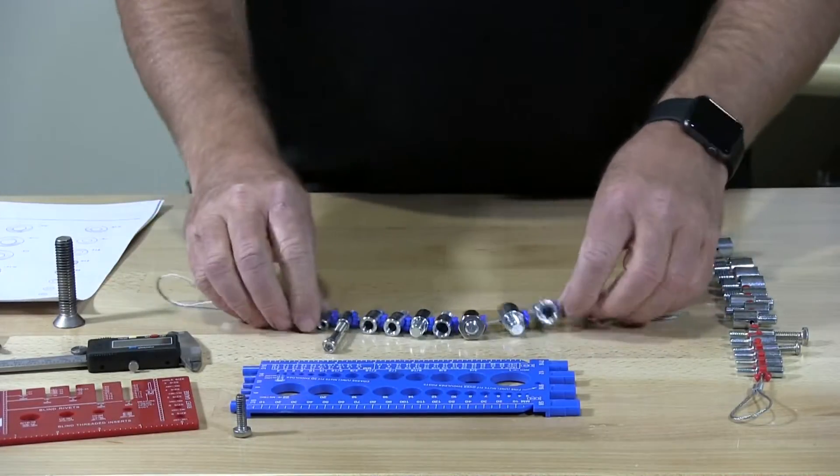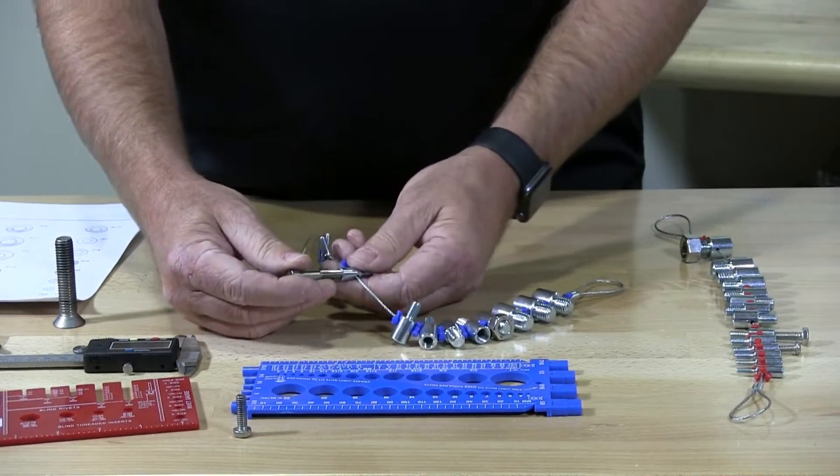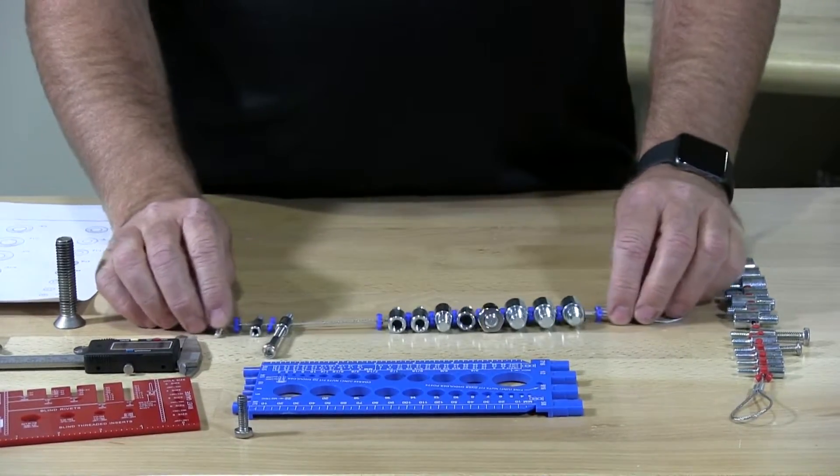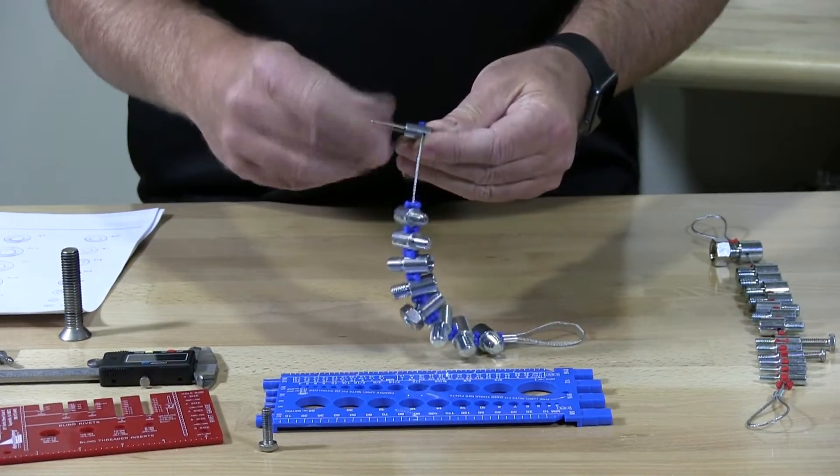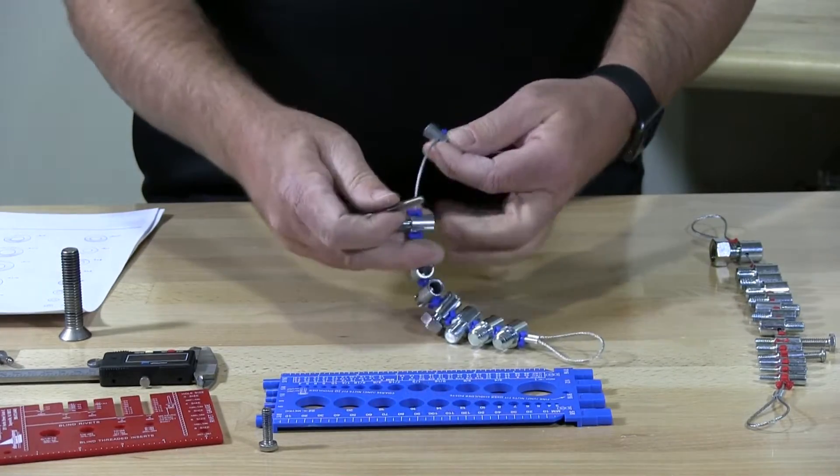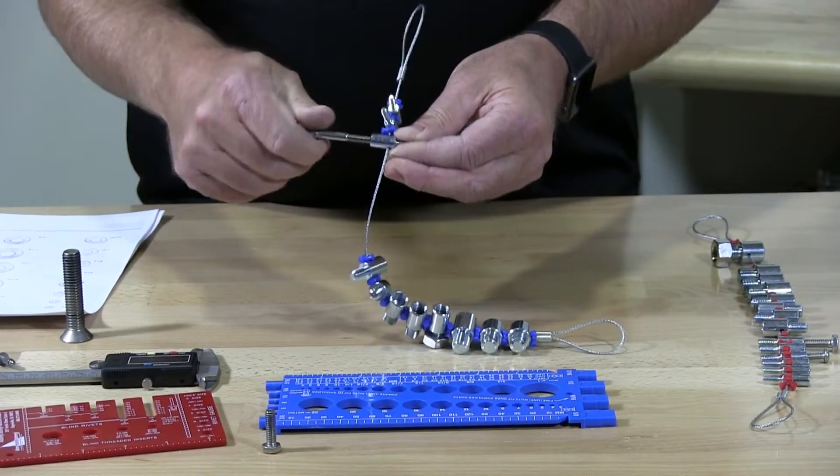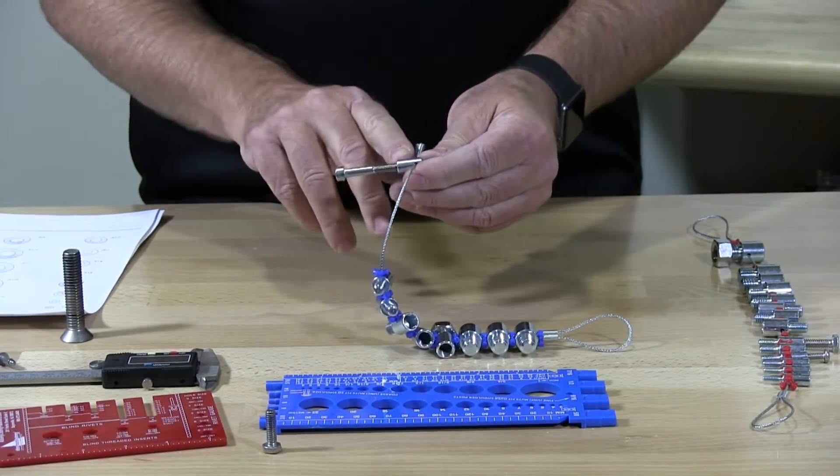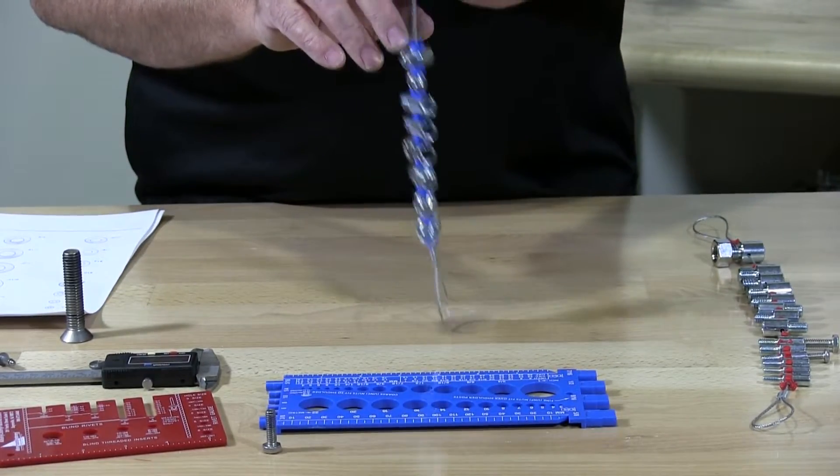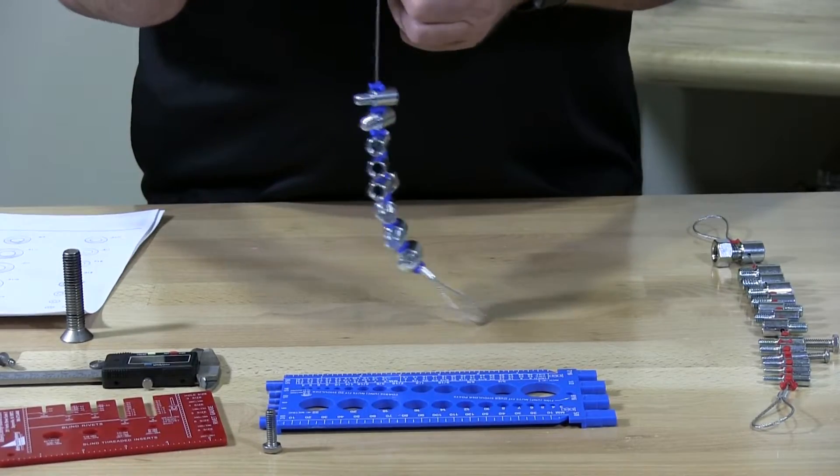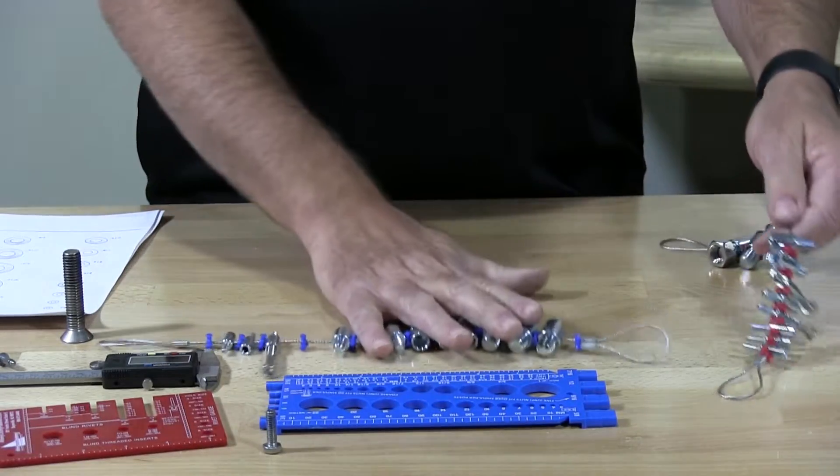This is another gauge where you can measure or find out what type of thread you have. And this is a metric. I have one that's in here that you can go to each one of these until it fits. And then you can find out at that point what thread you have along with the size. Because on here it will tell you that this is an M6 by 1.0. So you have an M6 by 1.0 thread pitch. So that's all for metric.